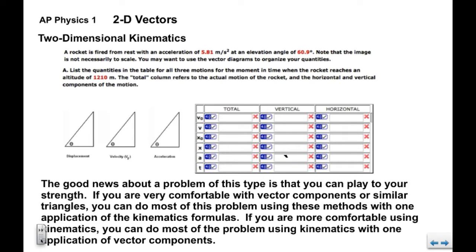Now, a standard example, we have a rocket that's fired from rest with a given acceleration and a given elevation angle, 60.9 degrees.